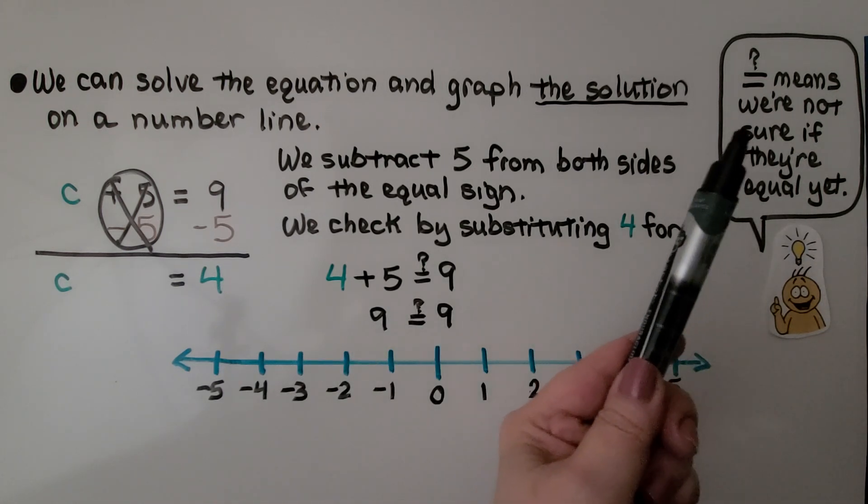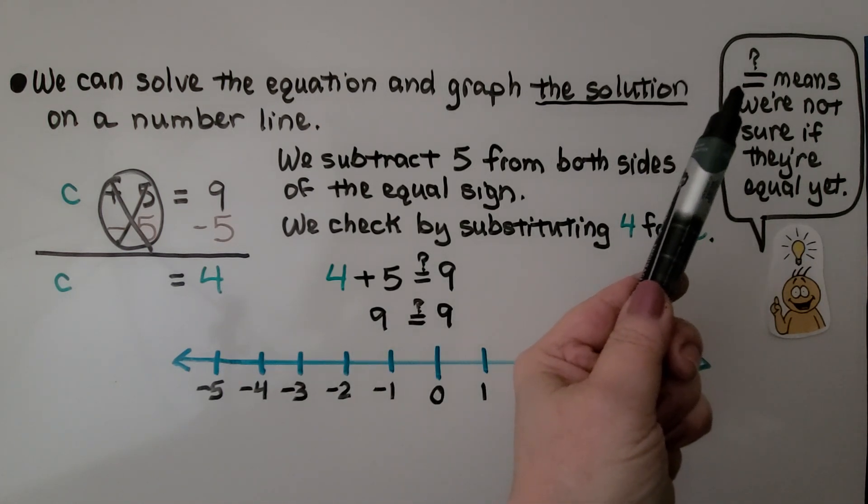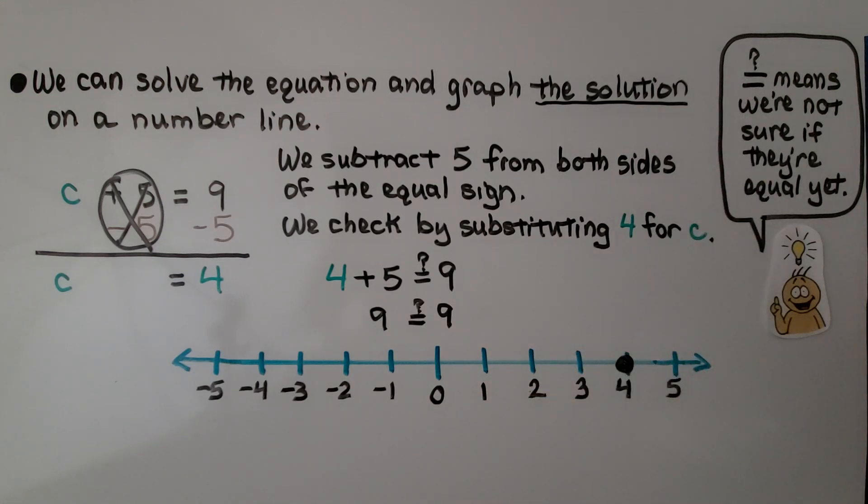Remember, the question mark above the equal sign means we're not sure if they're equal yet. We haven't found that out for sure yet. So is 9 equal to 9? We can graph it. c is equal to 4. Yeah, 4 plus 5 is equal to 9. So this is correct.